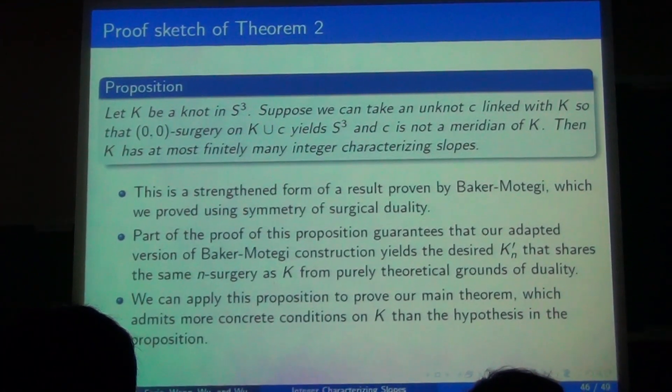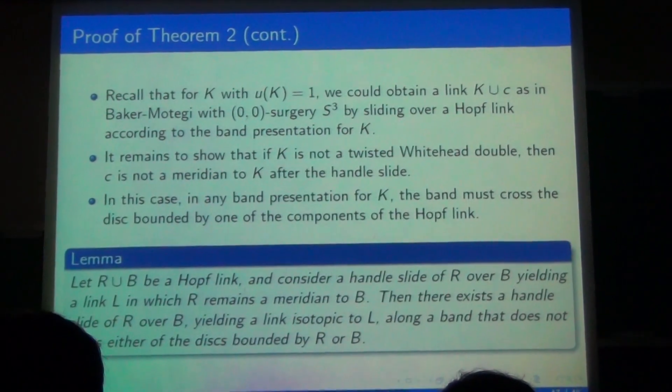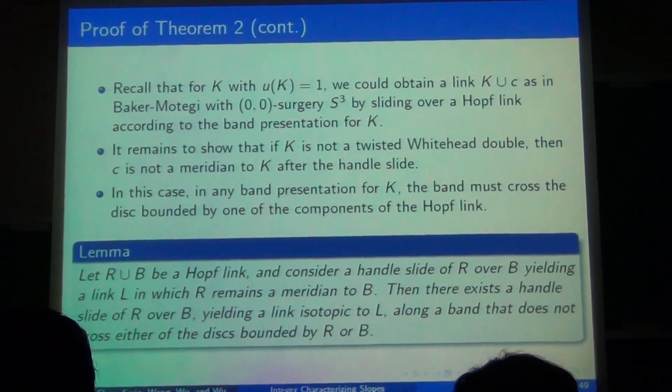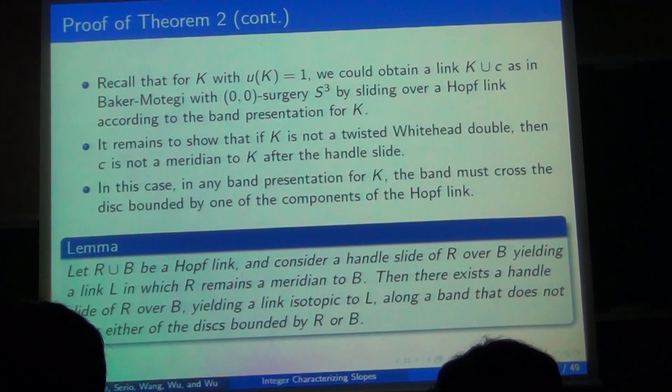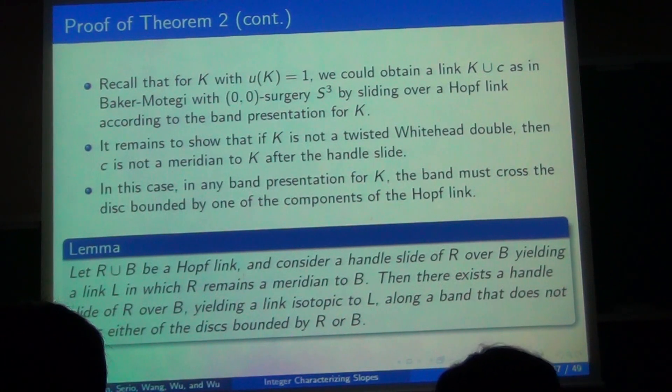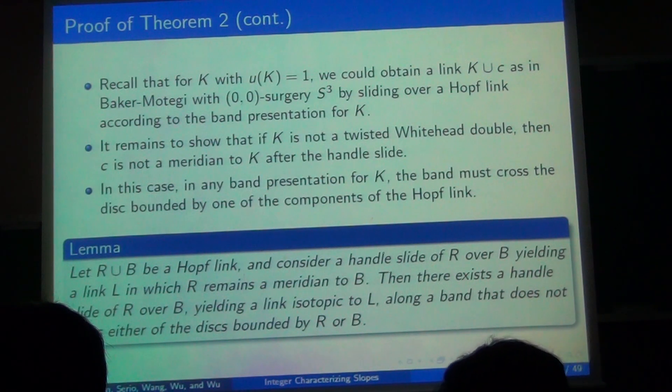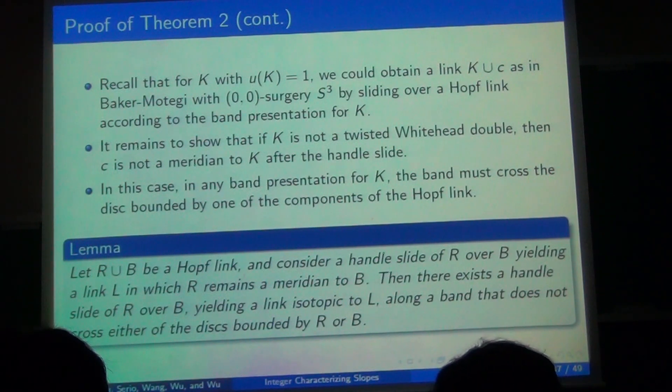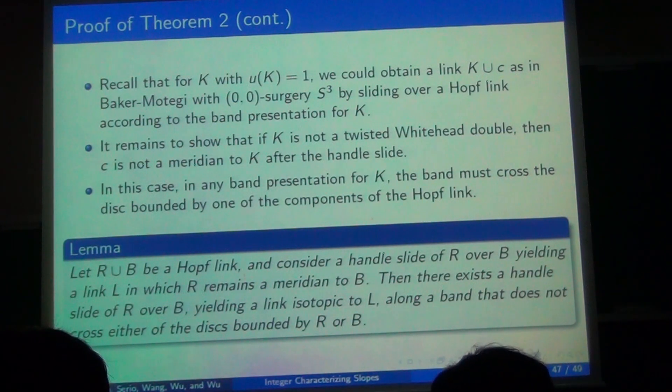So it lays the theoretical ground of basically all of our previous parts that were more experimental. And the next step is just to apply this proposition to prove theorem two, which has more concrete conditions. And recall that K has unknotting number one. We already said that the zero-zero surgery on K union C yields S³. So it boils down to showing that K is not a twisted double, which means that in any band presentation for K, the band must cross the disk bounded by one of the components. So we developed this lemma that says that if R union B is the hoplink, and if you do a handle slide of one component over the other, yielding like the first component still unknot, then there exists an equivalent handle slide by a band that does not cross either component.